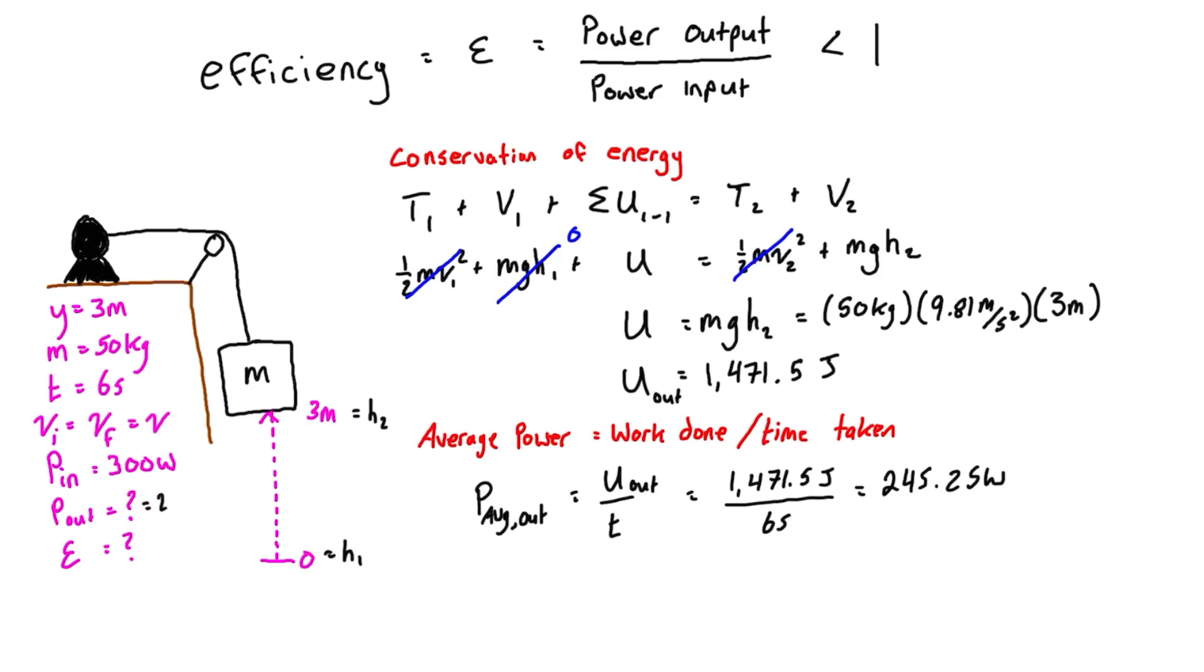So just to be really clear, we have found this 245.25 watts, and then we just need to plug that into our efficiency equation. We have epsilon—efficiency—is equal to the power out over the power in, which is 245.25 watts over 300 watts, the amount of power being supplied to the motor.